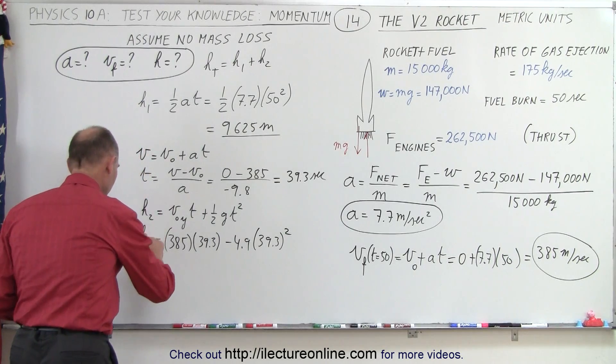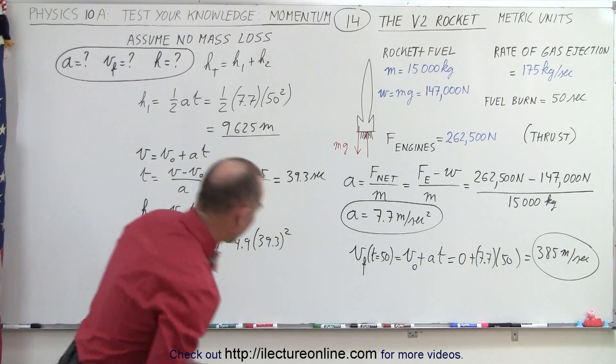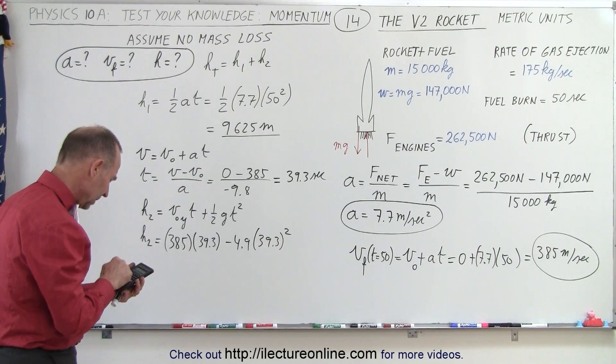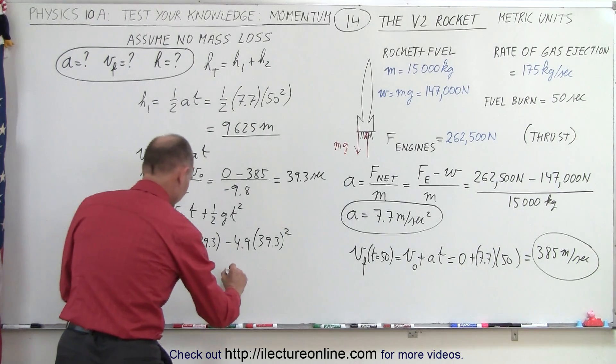All right. That's the additional height after the engines stop. So we take that number, we square that times 4.9 equals, that would be 7,562.5.